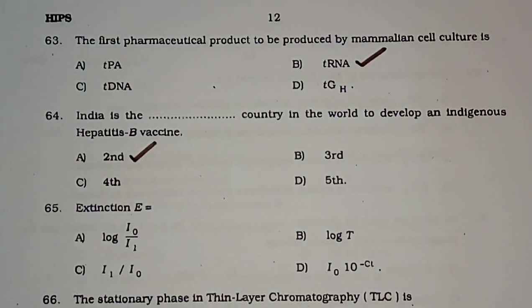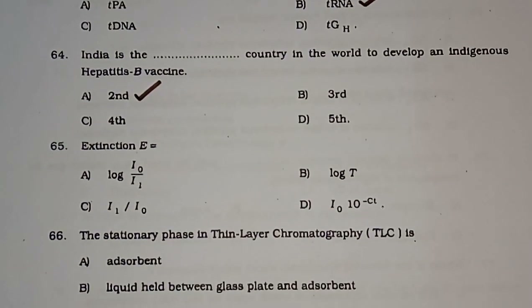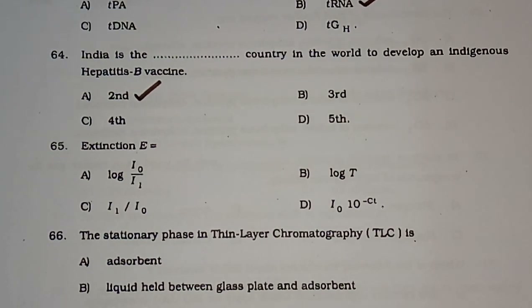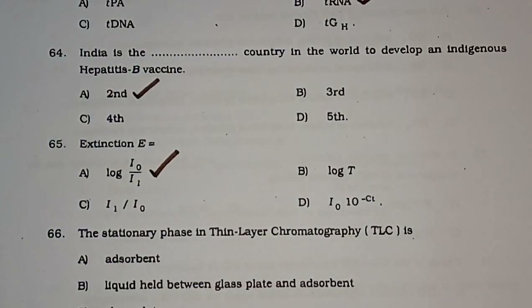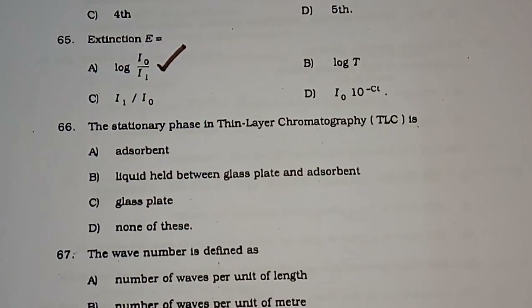Question number 64: India is the dash country in the world to develop an indigenous hepatitis B vaccine — second, third, fourth, or fifth. The correct answer is second. Question number 65: Extinction E is equal to — the correct formula is log(I0/I1). The correct answer is option A.